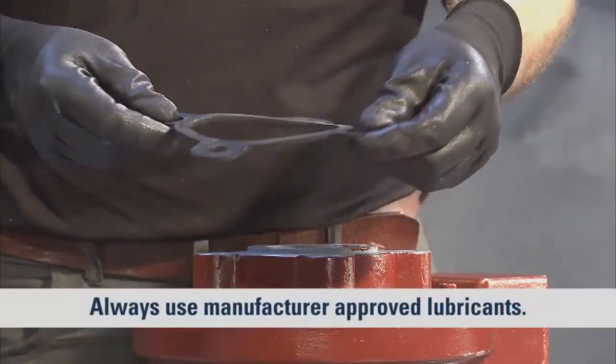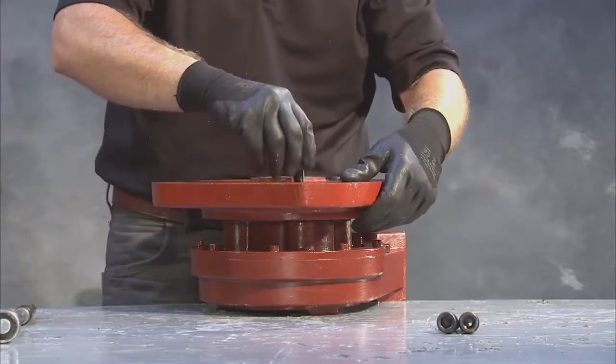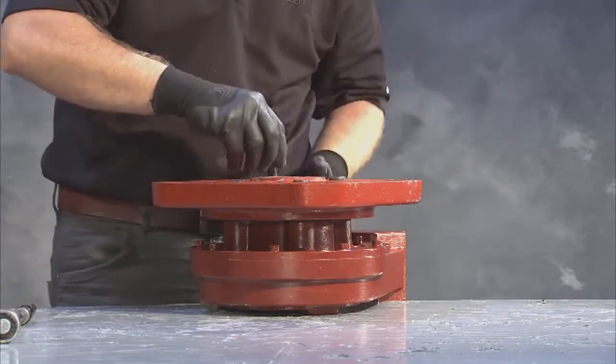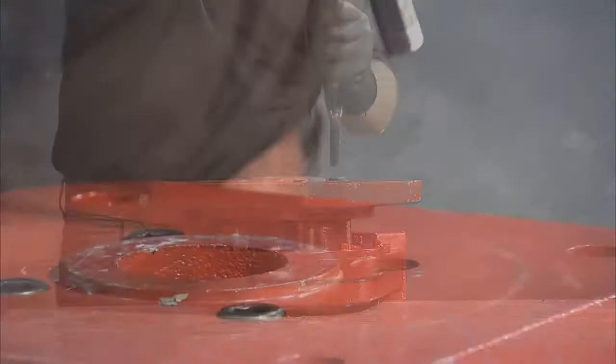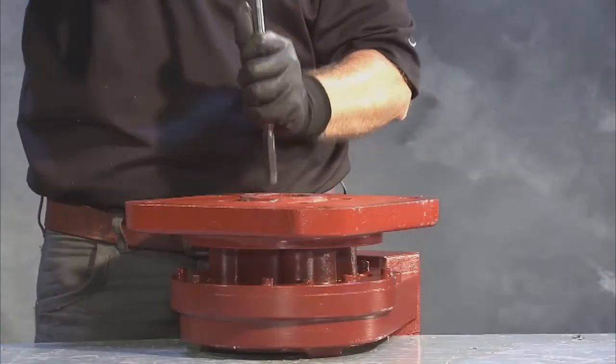Grease the adapter gasket or O-ring and attach the adapter plate to the new gear housing. Make sure that the gasket is properly installed between the adapter plate and the gear housing.